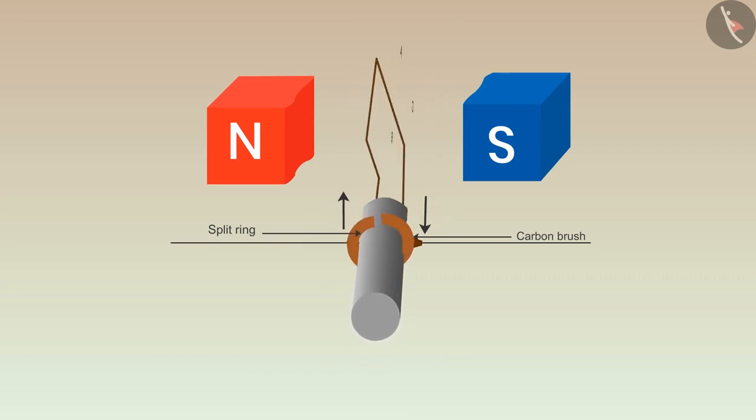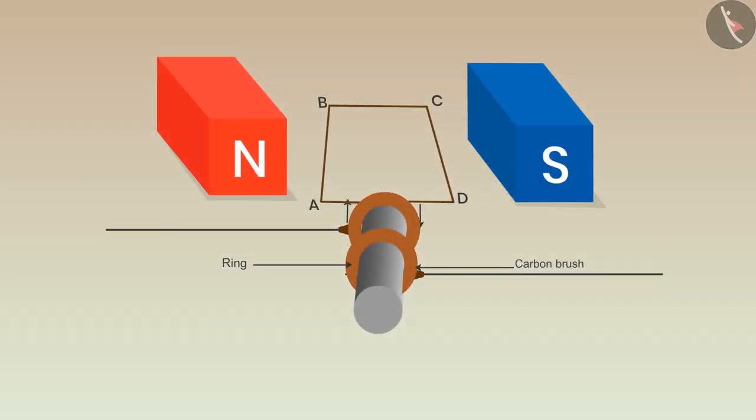Before finding the direction of induced electric current, let us do a small change in the setup. Replace the split ring with two complete rings and watch what effect this change would have on the system.